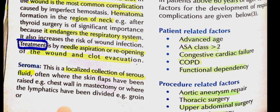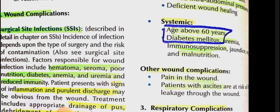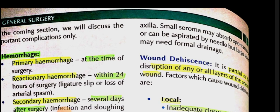Seroma is an important topic: it is a localized collection of serous fluid, occurring for example on the chest wall after mastectomy, or where lymphatics have been divided, such as the groin or axilla. Small seromas resolve on their own, but larger ones need aspiration by needle or formal drainage.